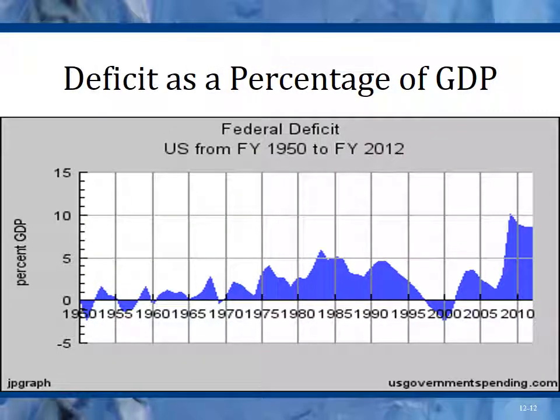Looking at the graph of deficit as a percentage of GDP: since 1950, you can see our yearly deficit as a percentage of total GDP — how much more we spend than we bring in as a percentage of our total GDP, which is about $15 trillion. Since 2009 was the peak, we have been up close to 10% since the Great Recession started. Prior to that, we had only been over 5% for a very short period of time.